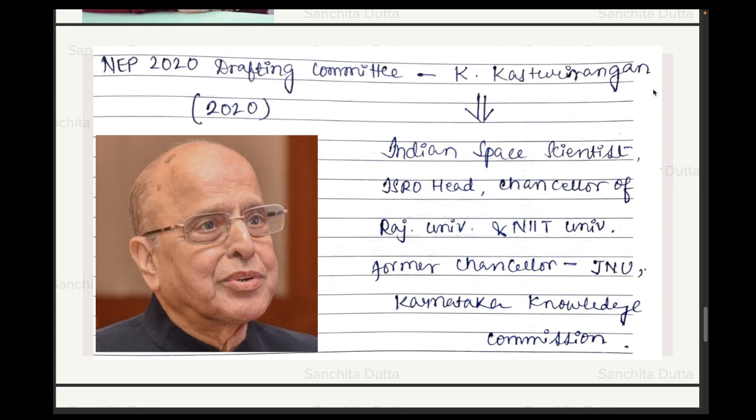The most recent one is the NEP 2020 drafting committee — the most comprehensive and detailed national education policy that discusses every aspect in great detail. It came under the leadership of K. Kasturirangan, who is an Indian space scientist and former head of ISRO. He was Chancellor of Rajasthan University and Jain University, former Chancellor of JNU (Jawaharlal Nehru University), and is currently the Chairman of the Karnataka Knowledge Commission.